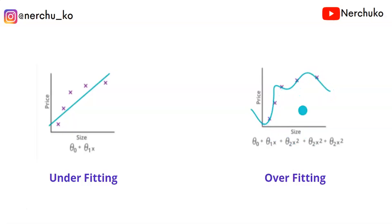Our model is 100% correct on training data. But if we train like this, there is a chance of overfitting. Suppose we have a new point here — we need to predict this point.